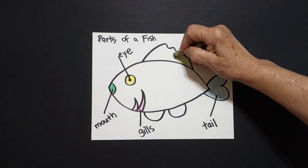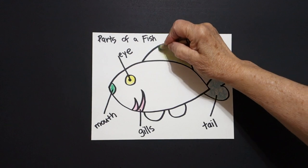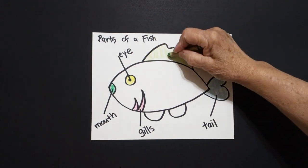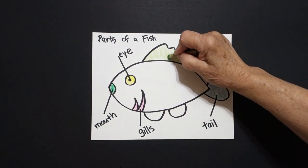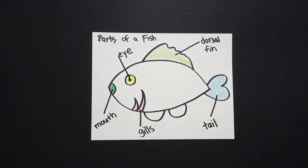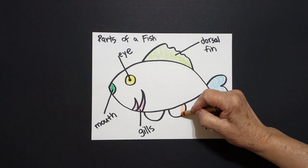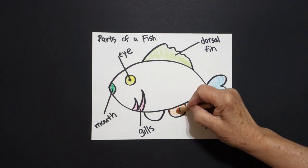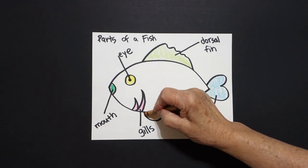Now, I take an apple green or a yellow green or a light green and I color my big dorsal fin. And now, I'm going to take orange and I'm going to color my baby fins down here at the bottom.